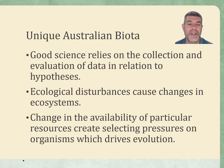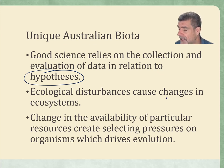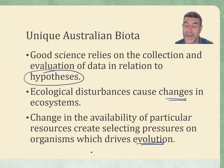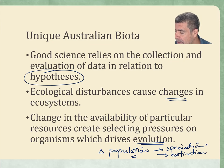Good science relies on collection and evaluation of data in relation to hypotheses. We need to have our scientific guesses based on what we already know and what we think might happen when we start to look at or collect data. We do know that ecological disturbances can cause changes in ecosystems. These changes can be temporary shifts — maybe seasonal change — and they can be permanent. They can be changes which can actually drive particular species towards extinction. Change in the availability of particular resources can create selecting pressures on organisms and this in turn can drive evolution. We see change happening at a population level and the changes that happen at a population level can either lead to speciation or it can also lead to extinction.